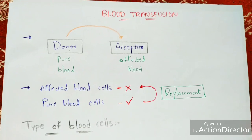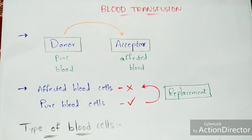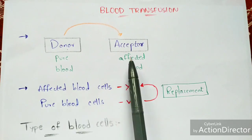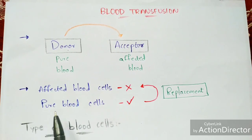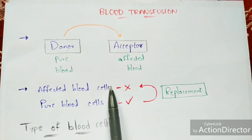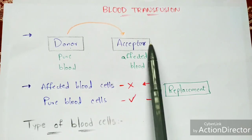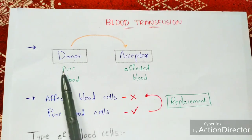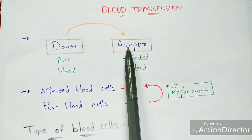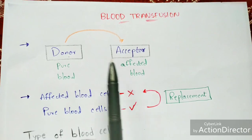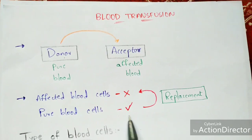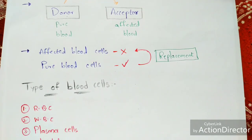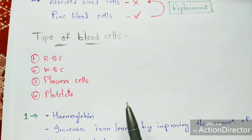When blood transfusion occurs, the pure blood cells replace the affected blood cells. The affected blood cells are present in the acceptor, and the pure blood cells are present in the donor. When these pure blood cells get transported into the acceptor, the affected blood cells get replaced — this mechanism is called replacement of blood cells.